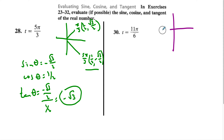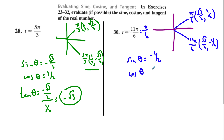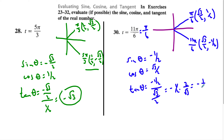For 11π/6: it's like going almost all the way around, the same as saying −π/6, which corresponds to π/6 — that's (√3/2, 1/2). Counting it out, 11π/6 is almost 2π and lands at (√3/2, −1/2). So the sine is −1/2, the cosine is √3/2, and the tangent is (−1/2)/(√3/2) = −1/√3. Rationalizing gives −√3/3.